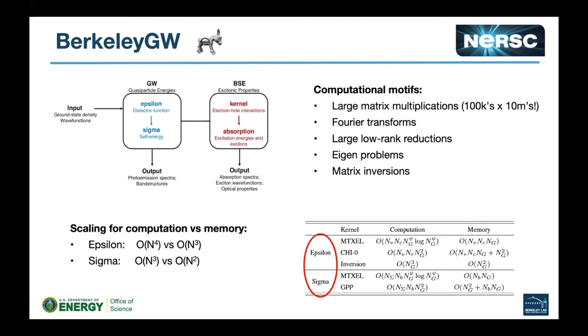But today I'm going to just focus on the GW-based calculations, which is Epsilon and Sigma. The other two are more on the Bethe-Salpeter equation based calculations.